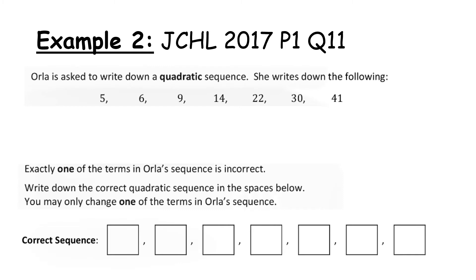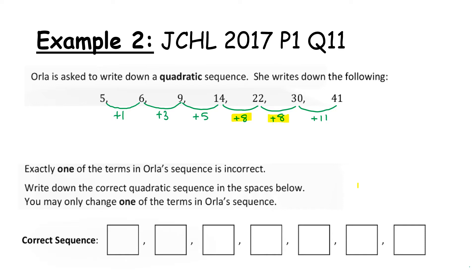Example 2: Orla is asked to write down a quadratic sequence and she writes down the following. Exactly one of the terms is incorrect — write down the correct quadratic sequence, changing only one term. The first differences are: add 1, add 3, add 5, add 8, add 11. That looks strange straight away — we notice a pattern of 1, 3, 5 in the first differences.